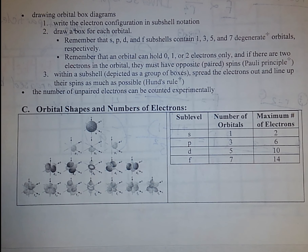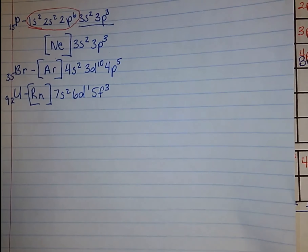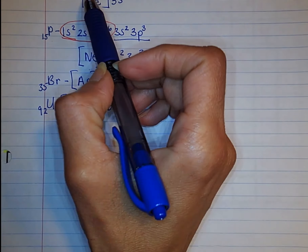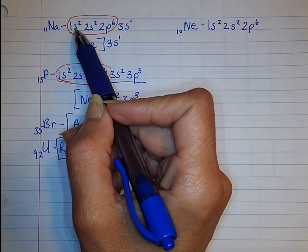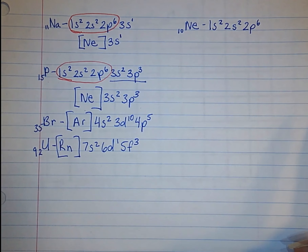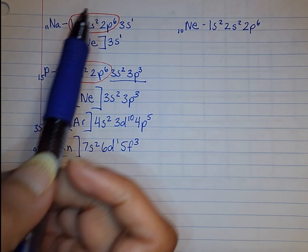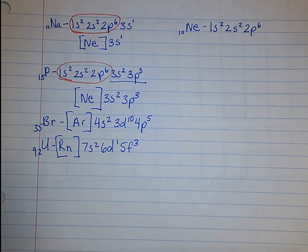When we talk about orbital notation, we need to discuss how electrons relate to one another. Whenever we wrote electron configurations, we were abiding by the Aufbau principle — starting from the lowest energy level and moving to the highest, going away from the nucleus. Orbital notation not only demonstrates the Aufbau principle, but also the Pauli exclusion principle as well as Hund's rule.